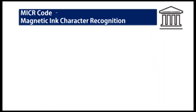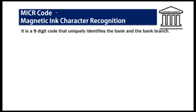Now let us look at how the clearing process works in today's times — how the CTS works. CTS runs on the MICR code. There is a MICR code on your check. MICR stands for Magnetic Ink Character Recognition. This is a key differentiator for checks. It is a nine-digit code that uniquely identifies the bank and the bank branch. The MICR code helps the RBI identify the bank and the bank branch.